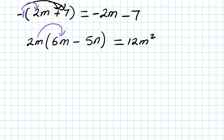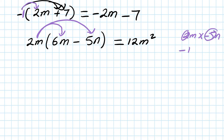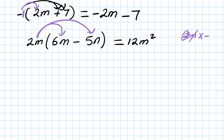Now the next one is 2m times minus 5m. So 2 times negative 5 — a positive times negative gives a negative. 2 times 5 is 10, and m times m is m squared. So your answer is minus 10m squared.